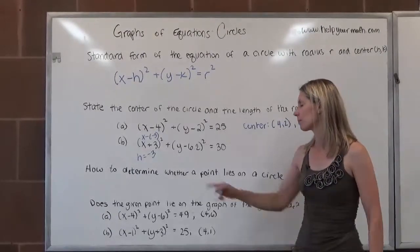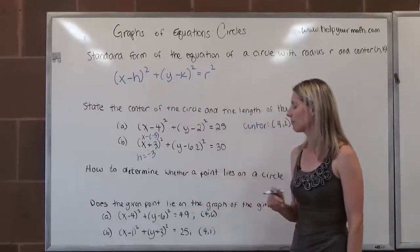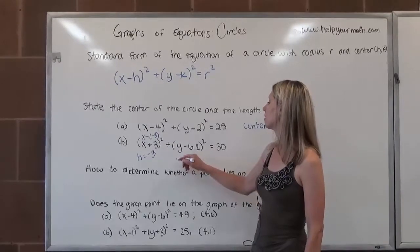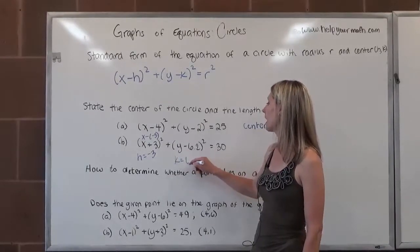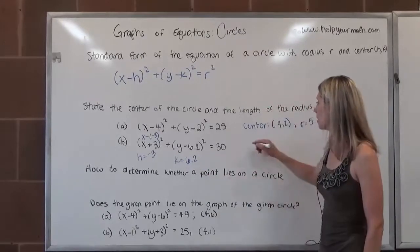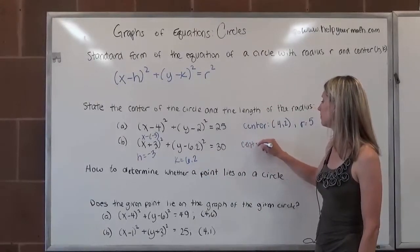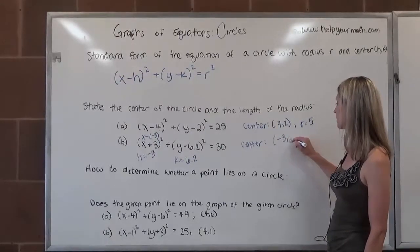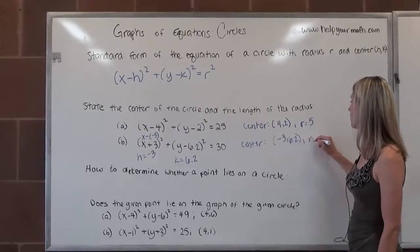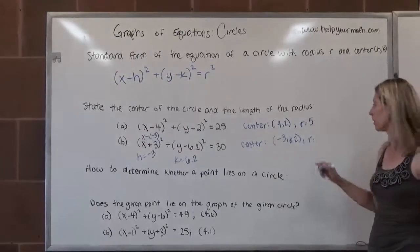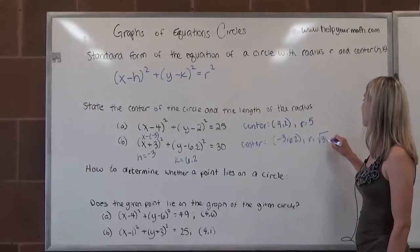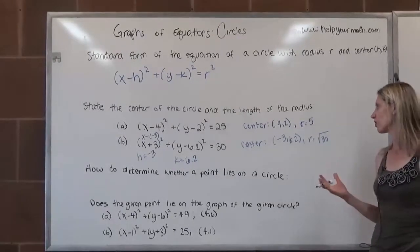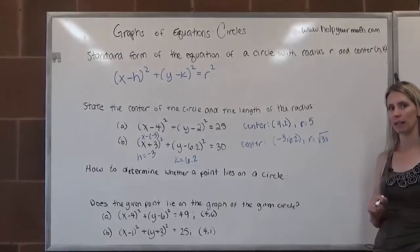Switching it also works. So we have the x coordinate of the center of the circle is negative 3, and the y, which we call k, is 6.2. So the center of this circle is located at (-3, 6.2). And the radius of this circle is the square root of 30. The square root of 30 is just the square root of 30. 30 doesn't have any perfect square factors except for 1, so we would just leave it like that.